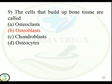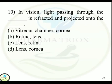Question 10: In vision, light passing through the [lens] is refracted and projected onto the [retina]. Option A: Vitreous chamber and cornea. Option B: Retina and lens. Option C: Lens and retina. Option D: Lens and cornea. Correct answer is Option C — lens and retina.